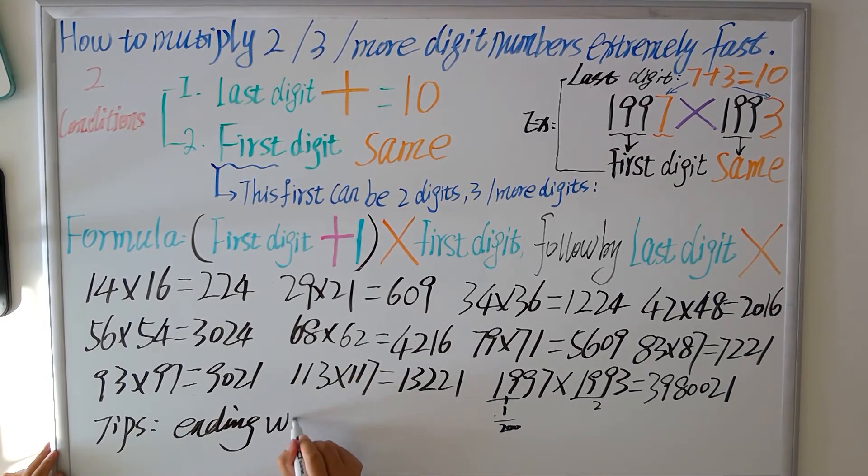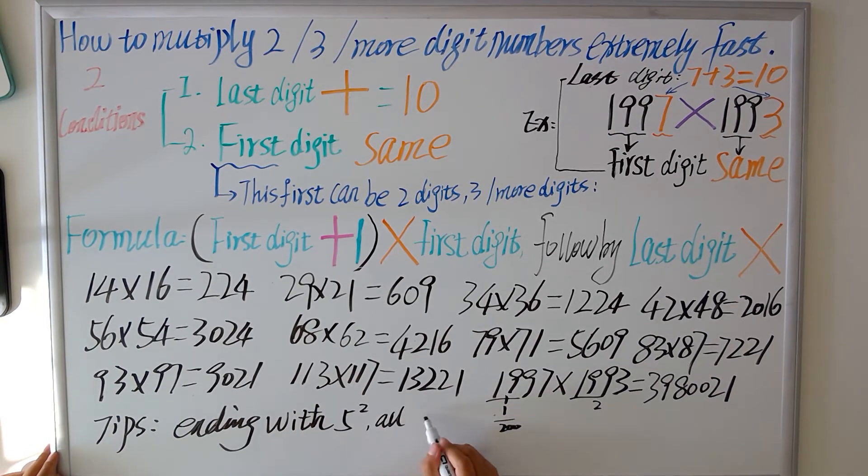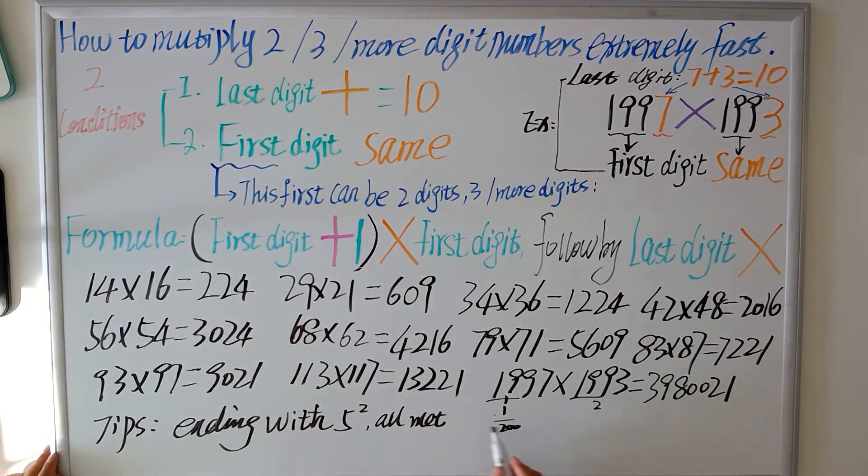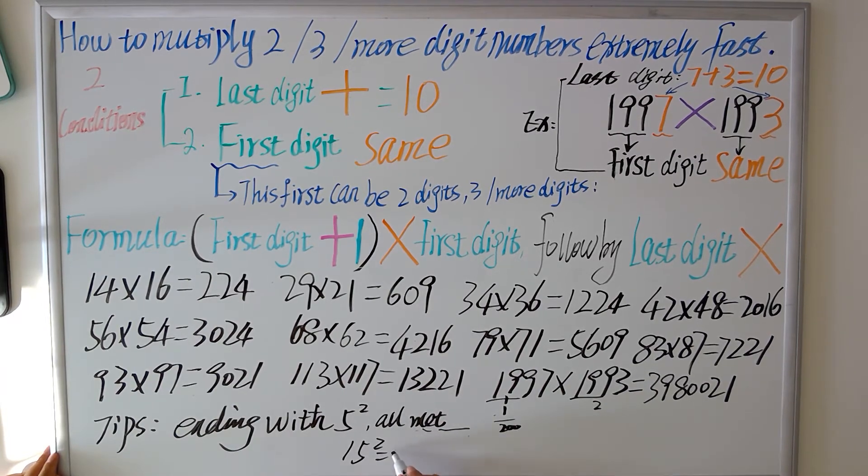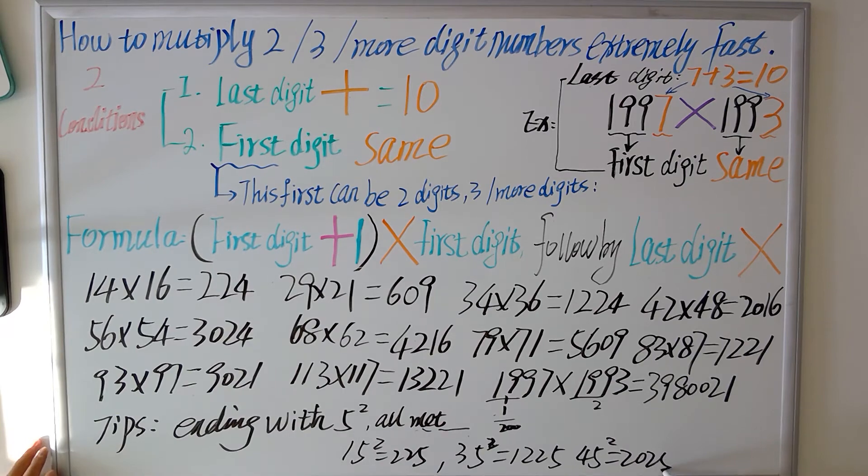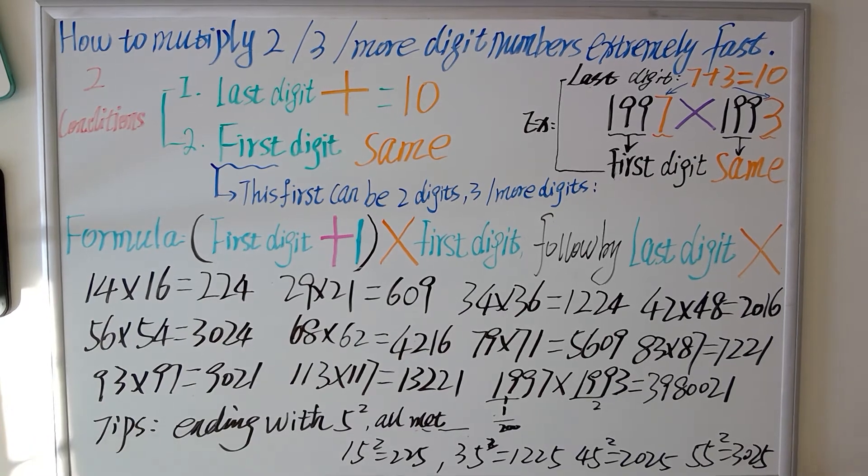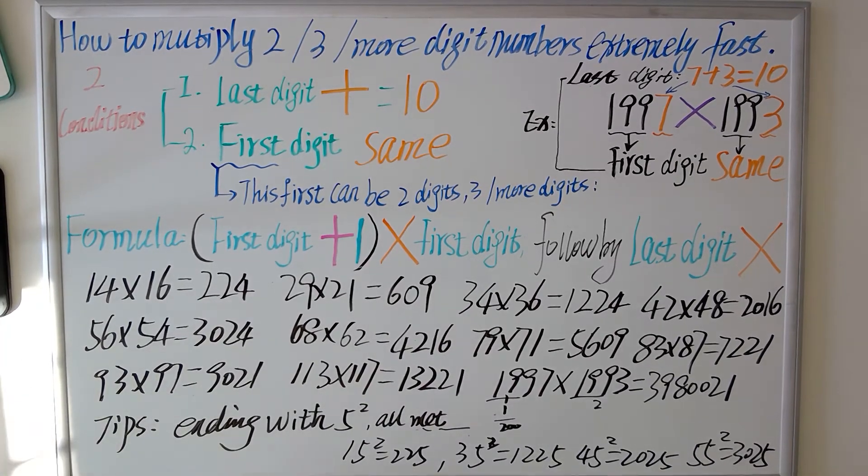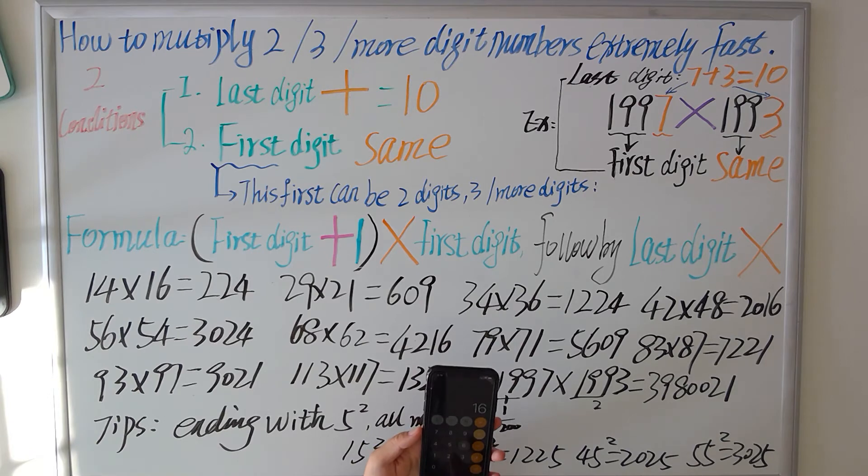Then give some tips: ending with 5 square, it will meet these two conditions. Okay, for example. Okay, now we are all done, so then we use technology test if it's right or wrong.